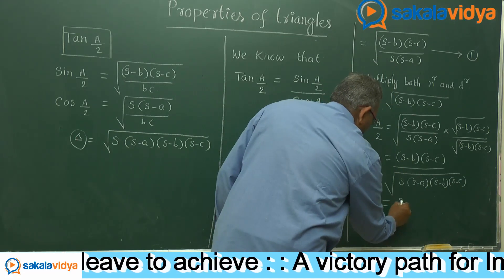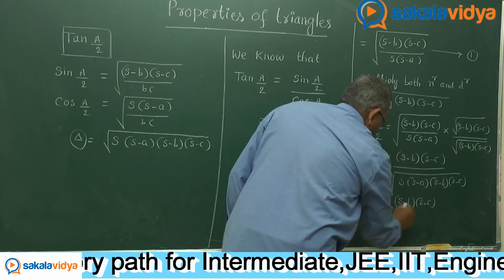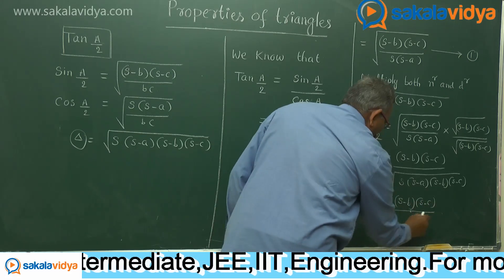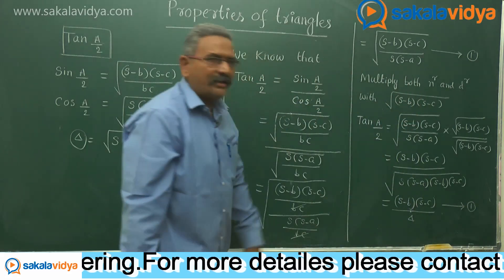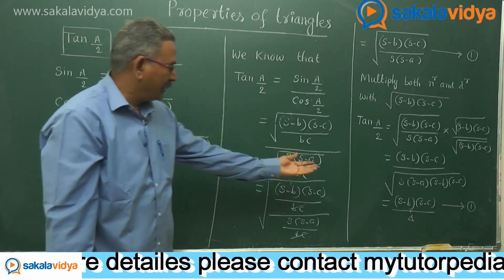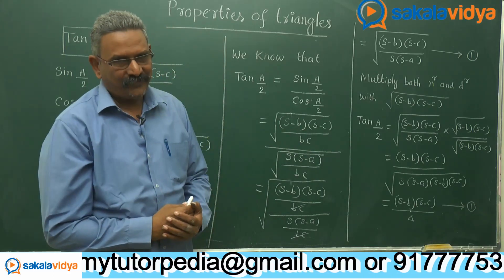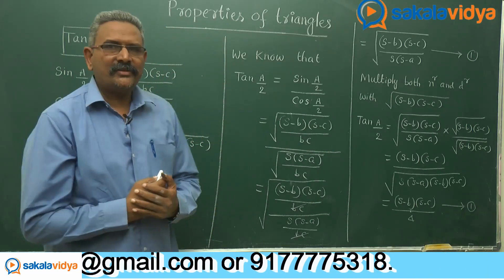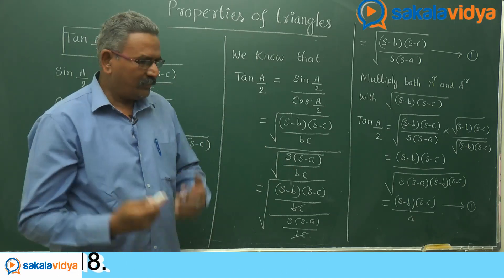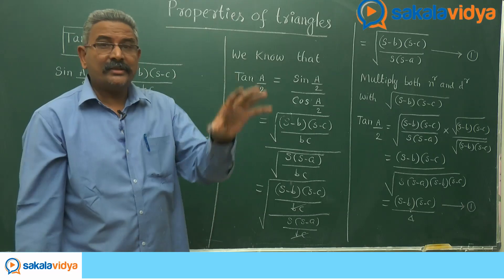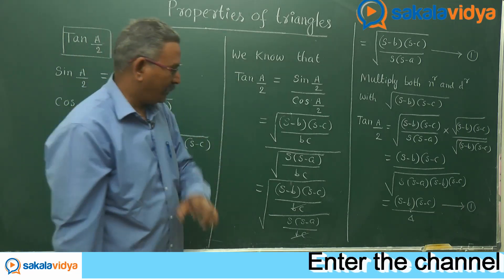So we get tan(A/2) = (s−b)(s−c) / delta. This is the result. In a similar fashion, we can find tan(B/2) and tan(C/2). Let us write all the values of tan(A/2), tan(B/2), and tan(C/2).